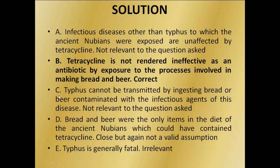Let's look at option C. Typhus cannot be transmitted by ingesting bread or beer contaminated with the infectious agents of this disease. This is not relevant to the question asked. Option D says bread and beer were the only items in the diet of the ancient Nubians which could have contained tetracycline. This is close but again not a valid assumption. Option E says typhus is generally fatal. This is again irrelevant.